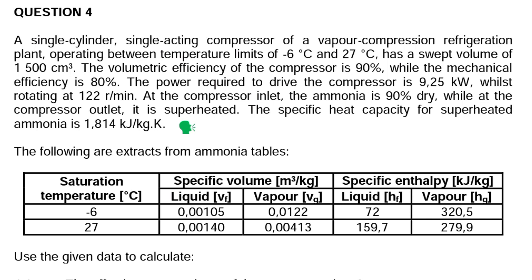That's question number four. It reads: a single cylinder, single acting compressor of a vapor compression refrigerant plant, operating between temperature limits of negative six degrees Celsius and 27 degrees Celsius, has a swept volume of 1500 cubic centimeters. The volumetric efficiency of the compressor is 90 percent, the mechanical efficiency is 80 percent, and the power required to drive the compressor is 9.25 kilowatts, rotating at 122 revolutions per minute. At the compressor inlet, the ammonia is 90 percent dry, while at the compressor outlet it is superheated. The specific heat capacity for superheated ammonia is 1.814 kilojoules per kg·K.